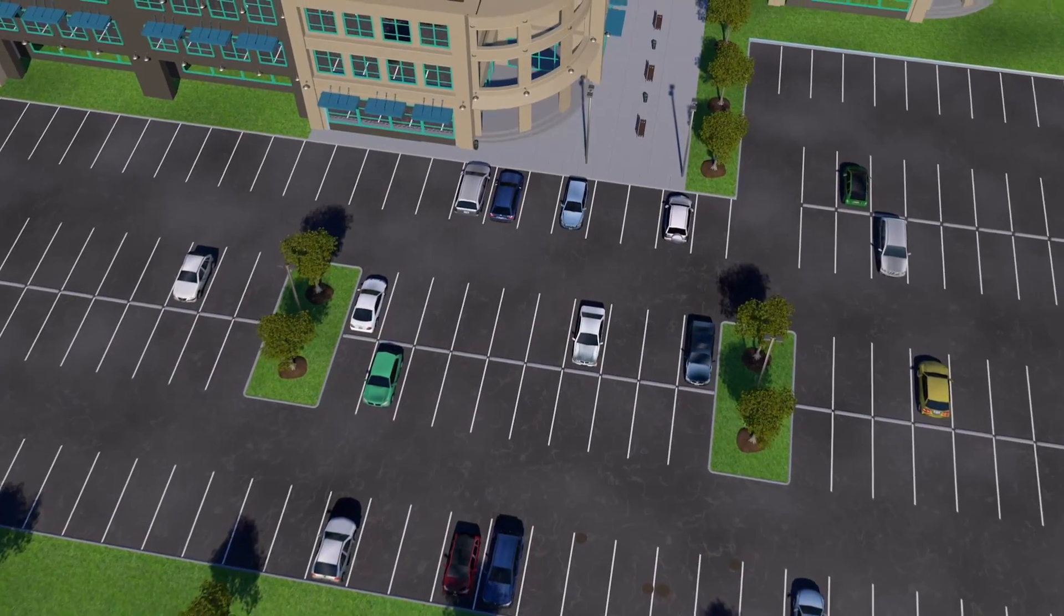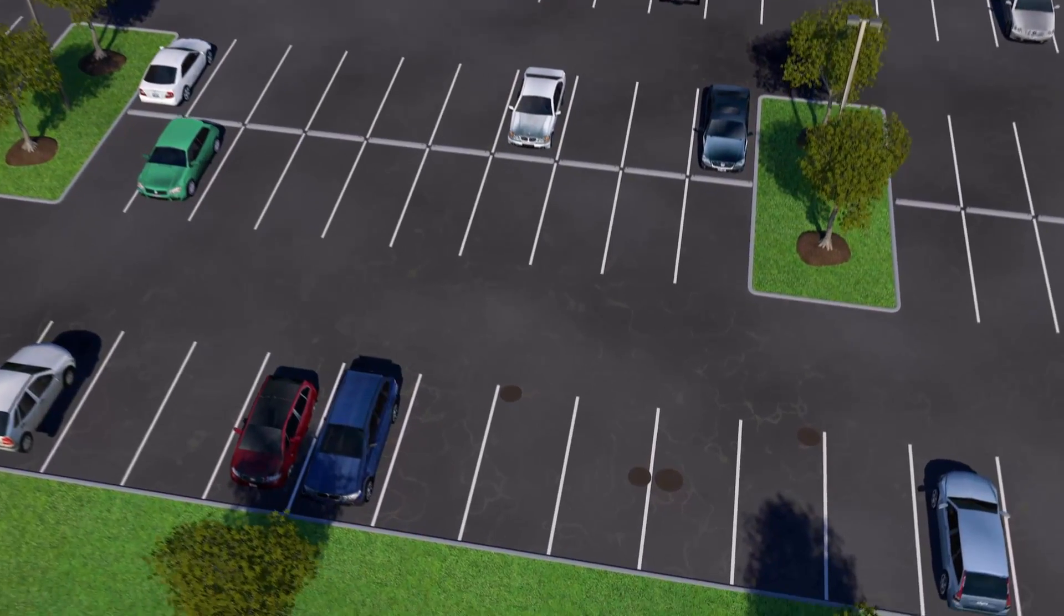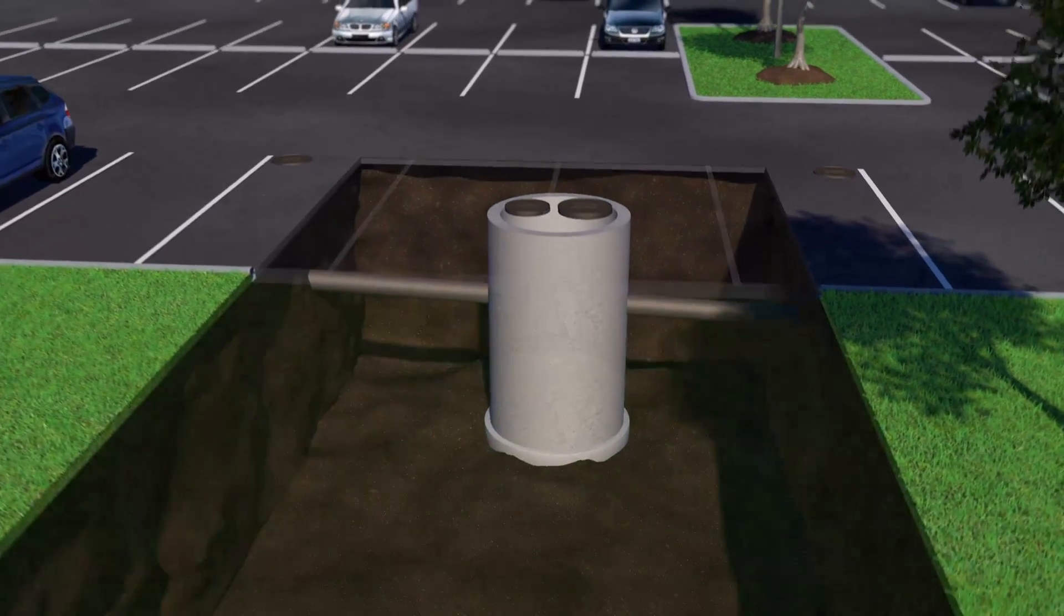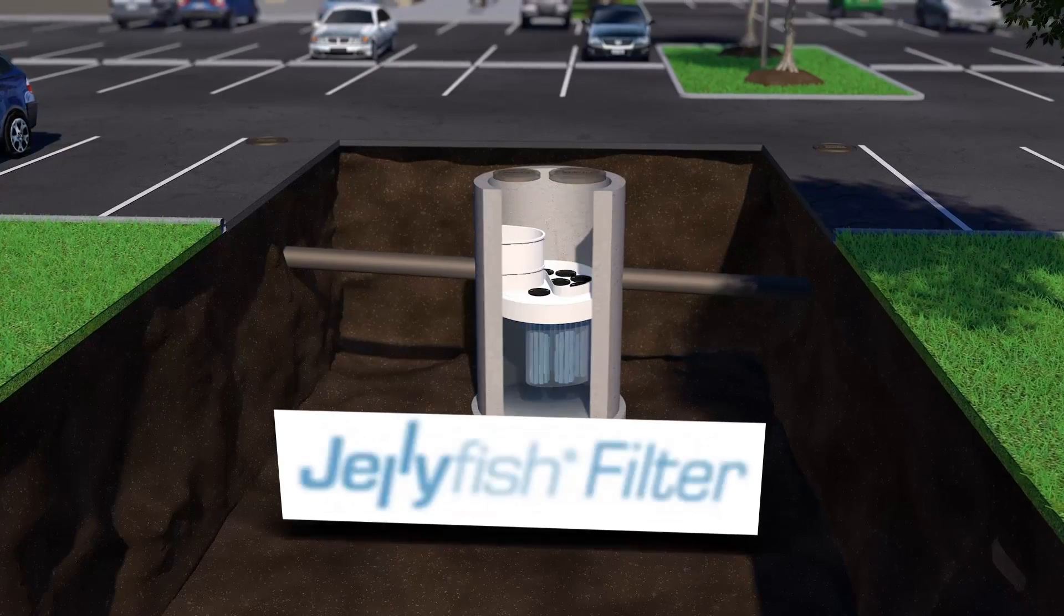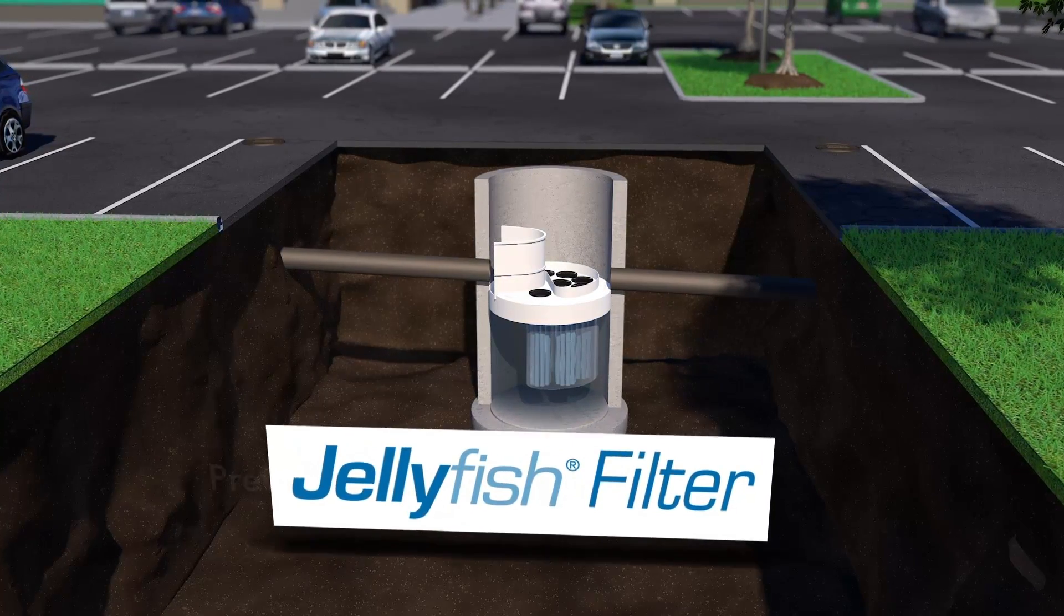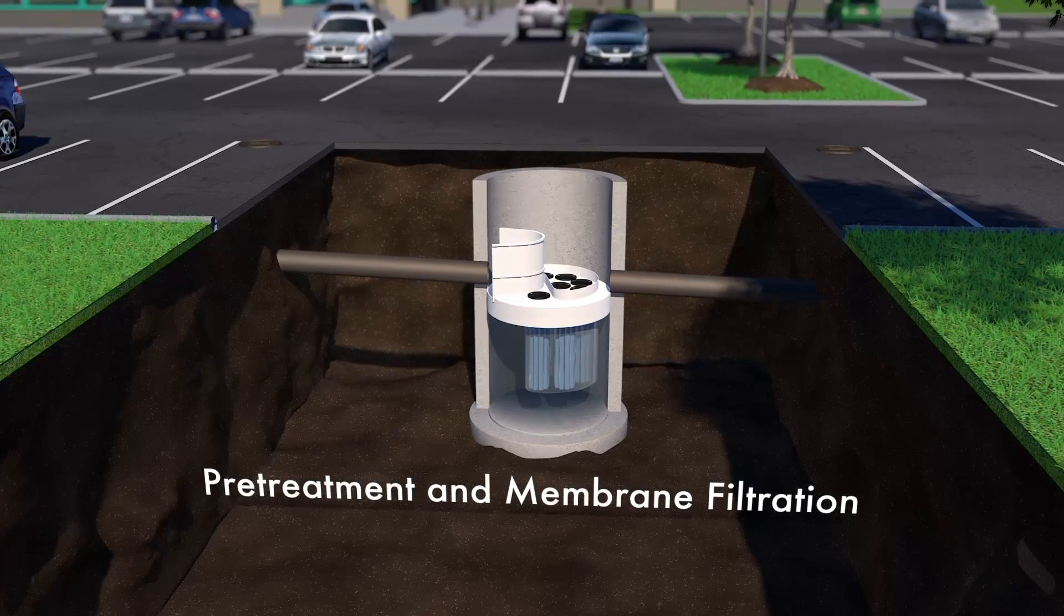With increasingly stringent stormwater management regulations, finding a stormwater treatment solution that is effective and efficient is more challenging than ever. CONTECH Engineered Solutions introduces the Jellyfish Filter, an engineered stormwater treatment technology featuring pre-treatment and membrane filtration in a compact system.